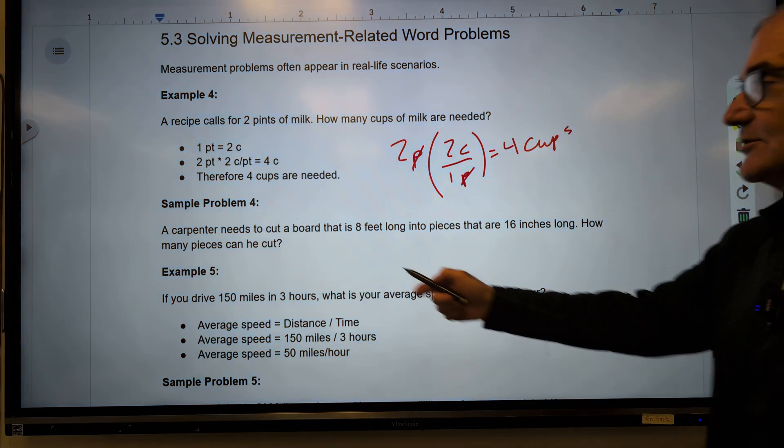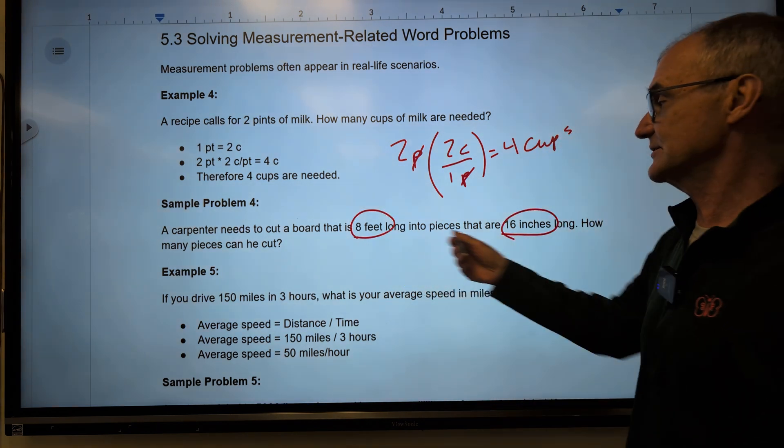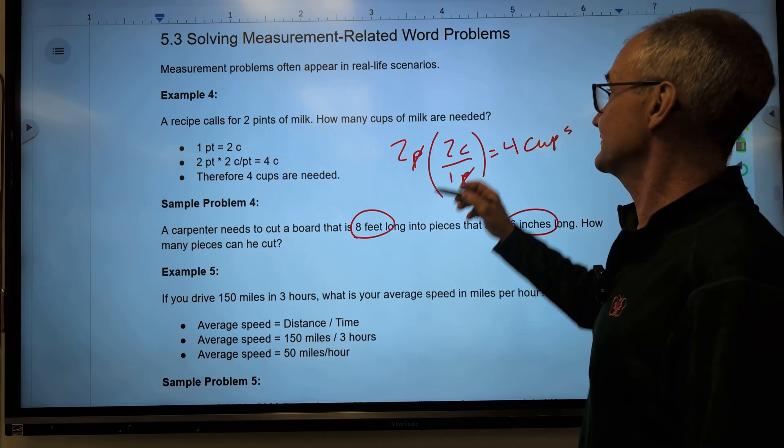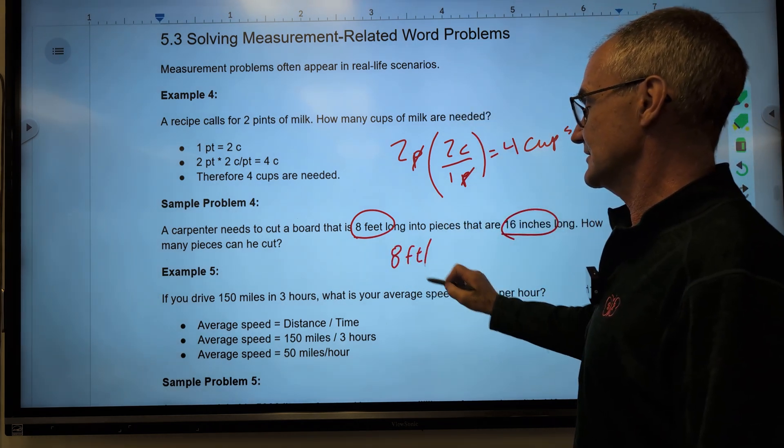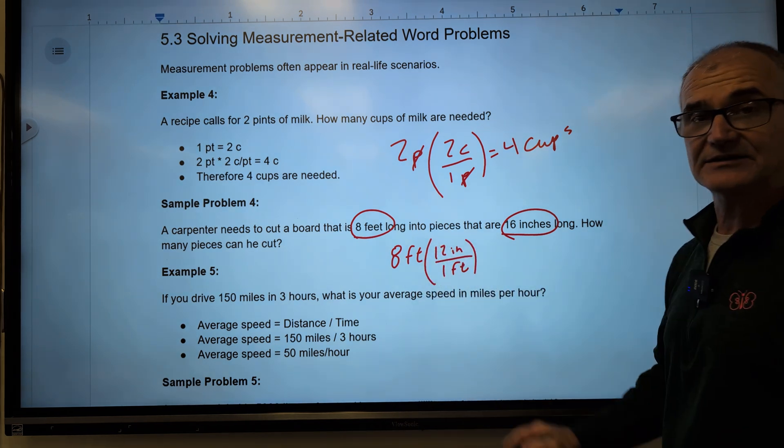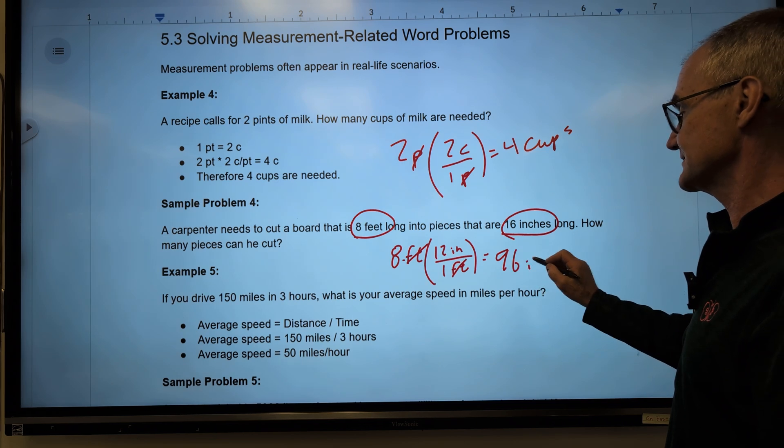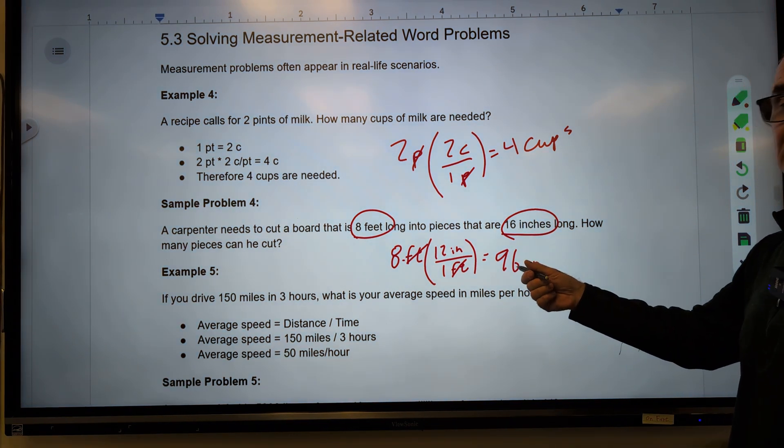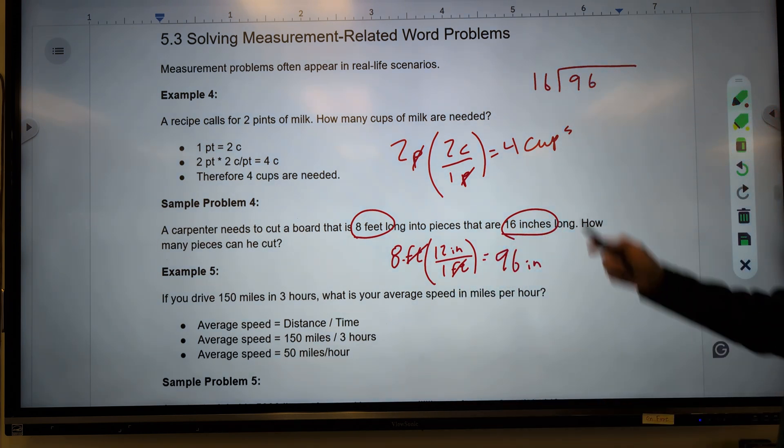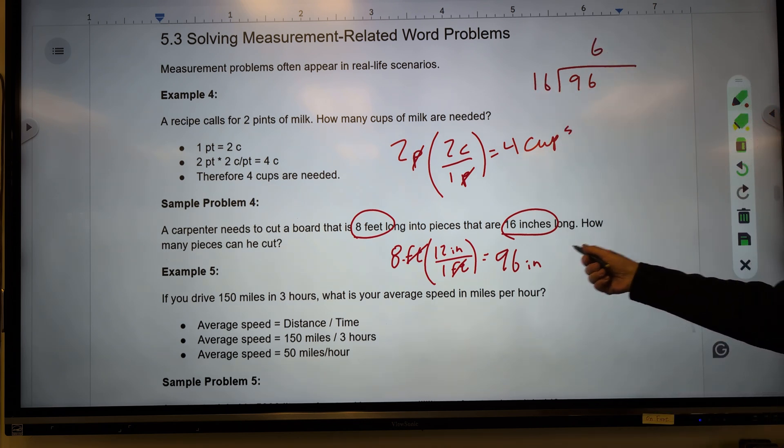Here's another sample problem. A carpenter needs to cut a board 8 feet long, and the pieces that are 16 inches. Key to this problem is I notice different units, so I've got to either convert this all into inches or convert this into feet. So I'm going to take this 8 feet. I know there are 12 inches per foot. Multiplying by one doesn't change the value. My units here cancel. That's going to give me inches, so I have 8 times 12, 96 inches. How many 16-inch boards go into 96 inches? So I need 16 into 96. It'll be 6. So the correct answer here is 6 boards.